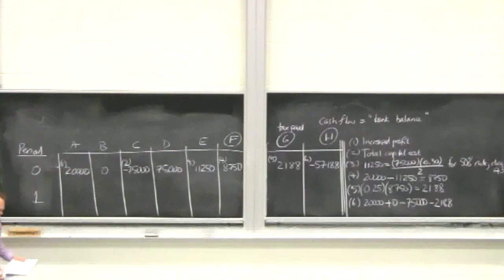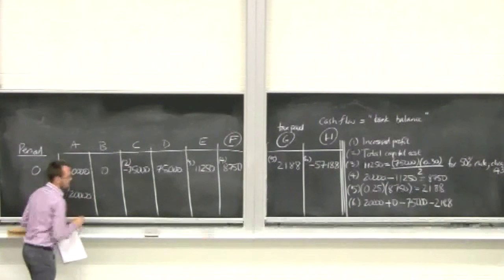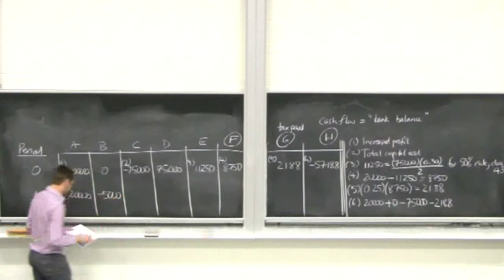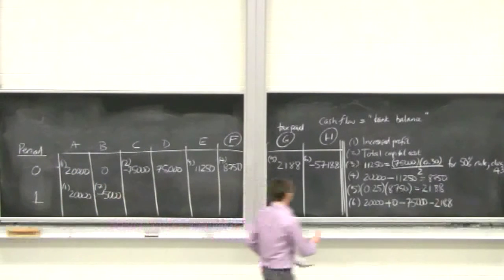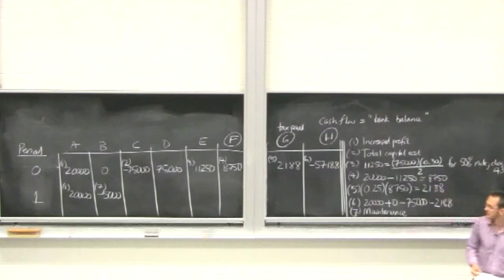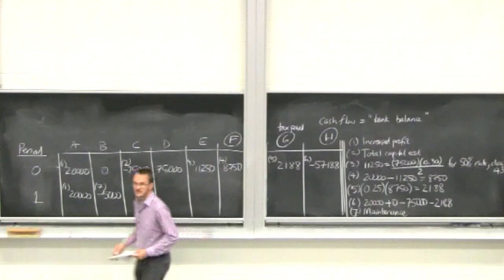Let's do the next period. The income is still $20,000 — same note as before. In the second period, eligible expenses: maintenance starts to show up, so minus $5,000. Note: maintenance. Non-eligible expenses in column C: zero dollars — we're not spending money on new capital costs this year.